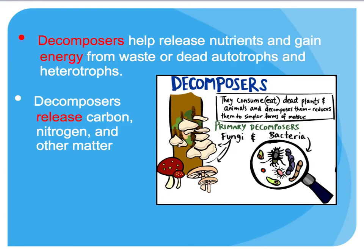Decomposers are also very important to an ecosystem because they help release nutrients back into the environment. They get their own energy from waste or dead autotrophs and heterotrophs, re-releasing carbon, nitrogen, and other matter back into the environment. Examples of decomposers include fungi and bacteria, which break down dead plants and animals and re-release minerals and organic compounds back into the environment.